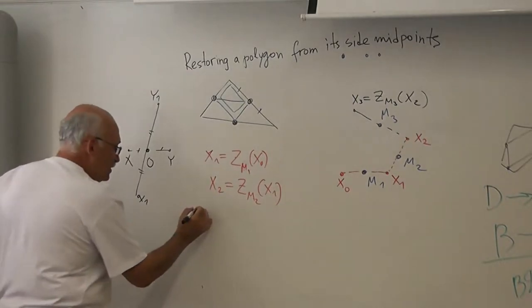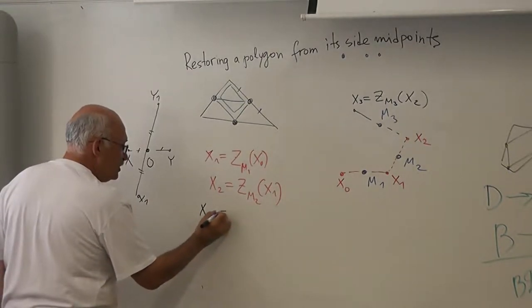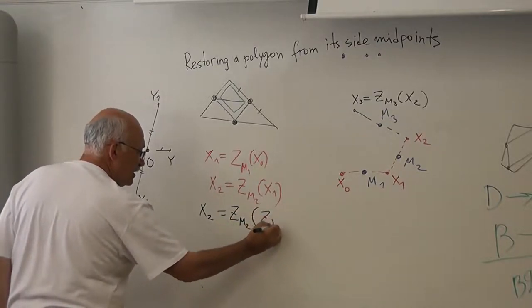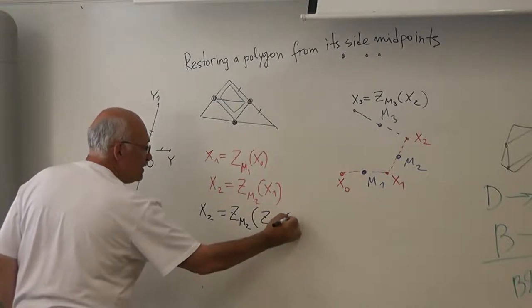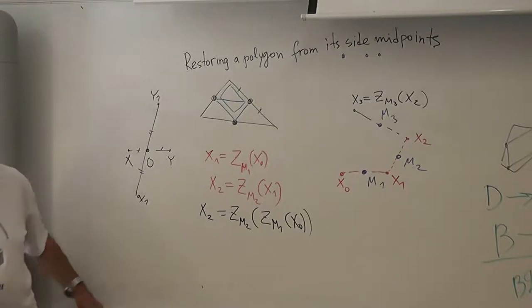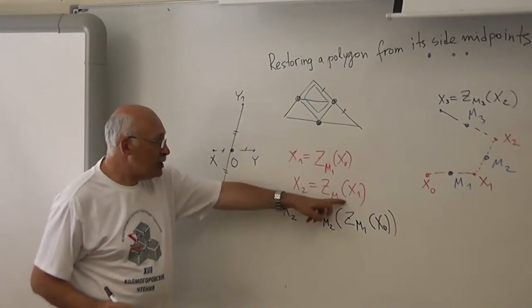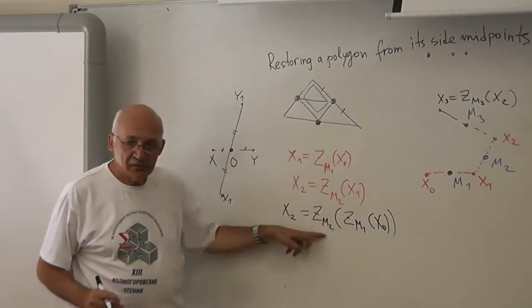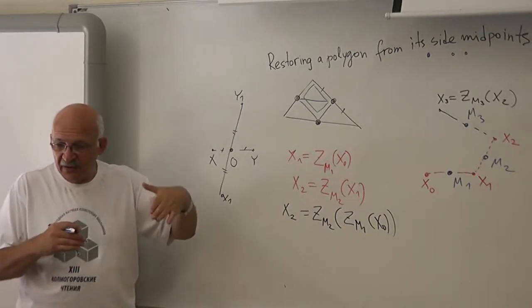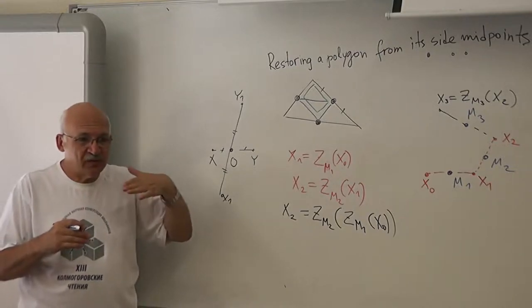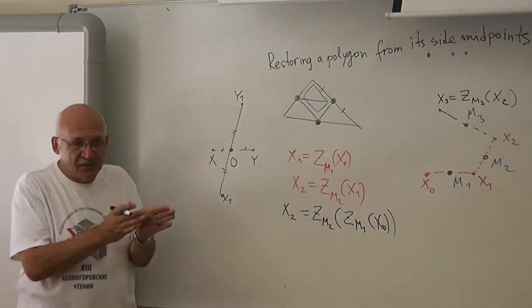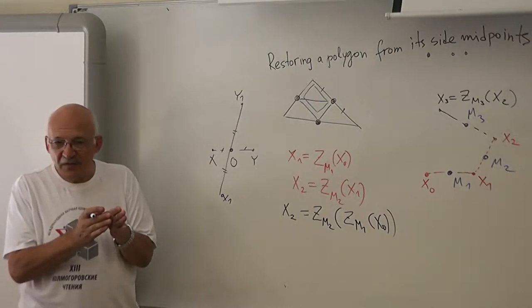So I can write this: X2 is ZM2 of ZM1 of X0. When I perform one transformation after another, this is called what? When we take two transformations and take the combination, how do we call it? Do you remember?